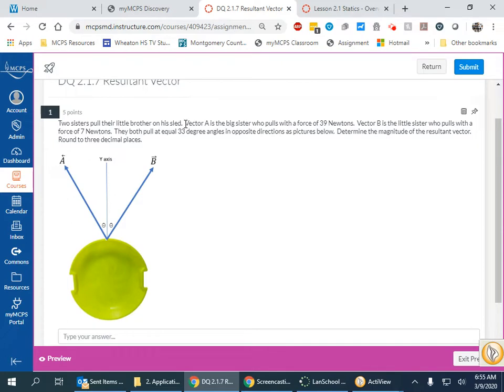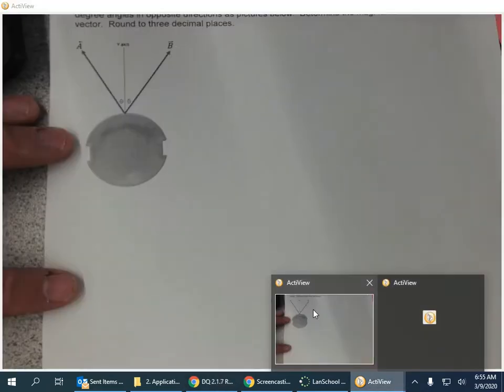Says two sisters pull their little brother in the sled. Vector A is 39 newtons, vector B is 7 newtons, and the angle is 33 degrees. So let's go ahead and write all that down.